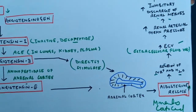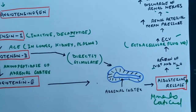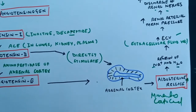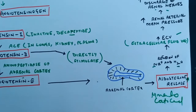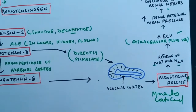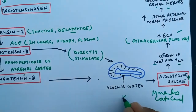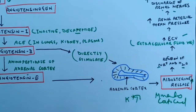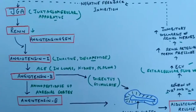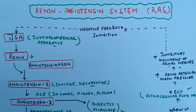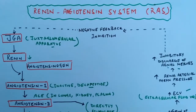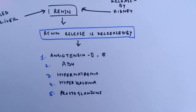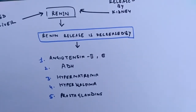The main role of the renin-angiotensin system is to control the sodium and water level. Retention of sodium and water is increased by aldosterone, and the secretion of potassium is increased in the urine. This is the overall function of the renin-angiotensin system.